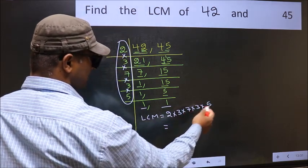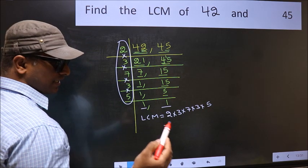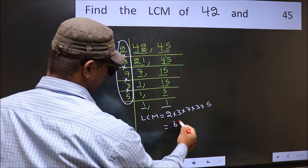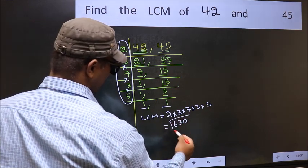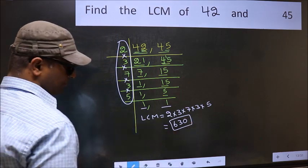When we multiply these numbers, we get 630 as our LCM.